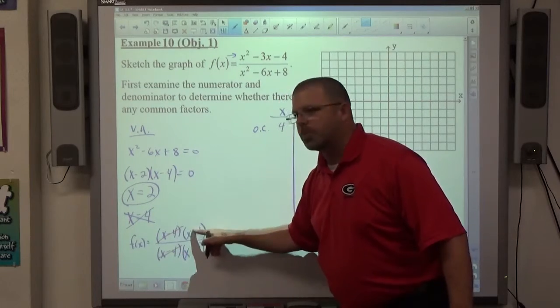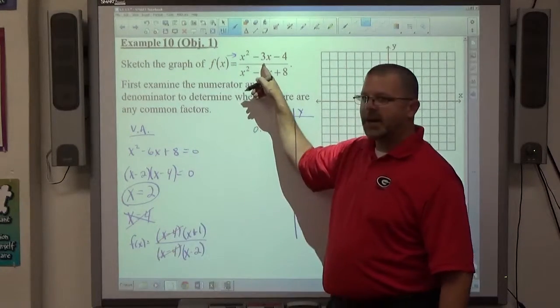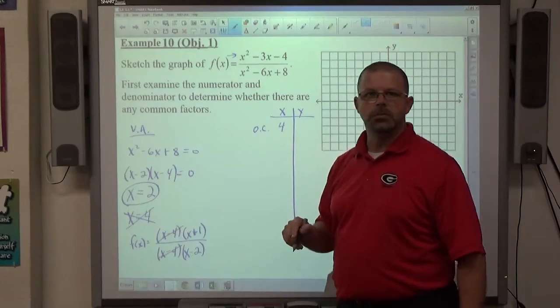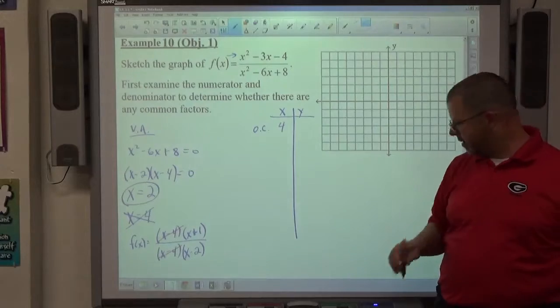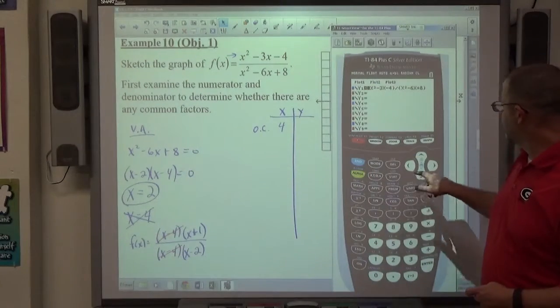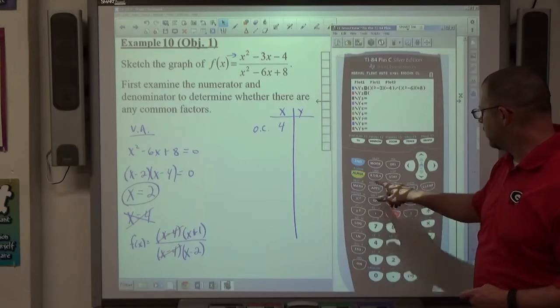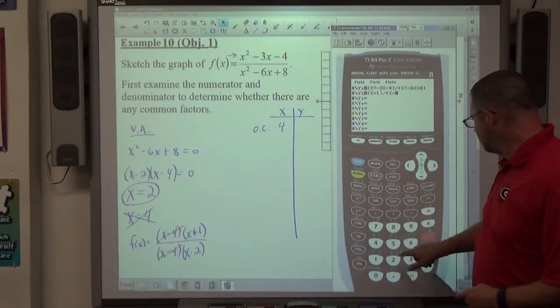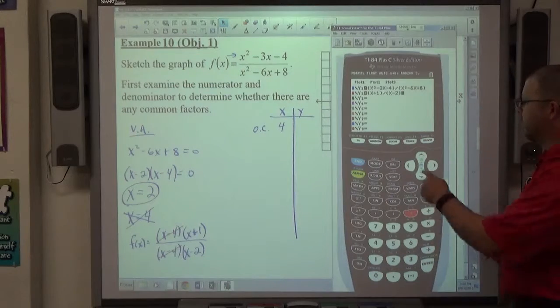x - 4 on top and bottom cancels. This equation here, this expression, has the same graph as that, except 4 can be put into that one. 5/2. It has an actual value, 2.5. So if we take a look at that, then I'm going to go back here, y, and I'm going to type in (x + 1)/(x - 2).